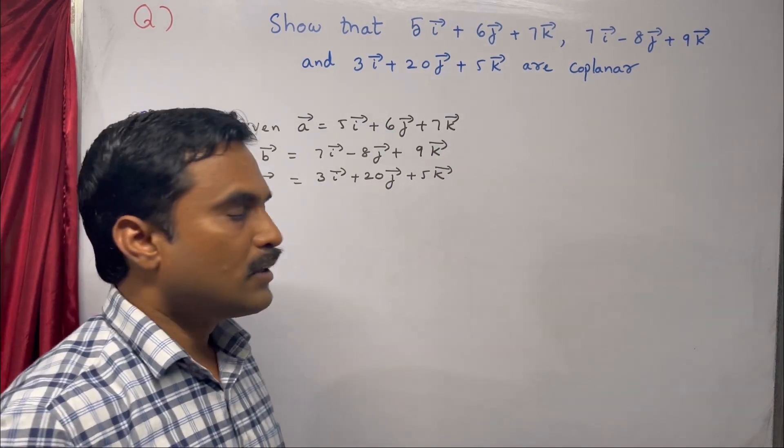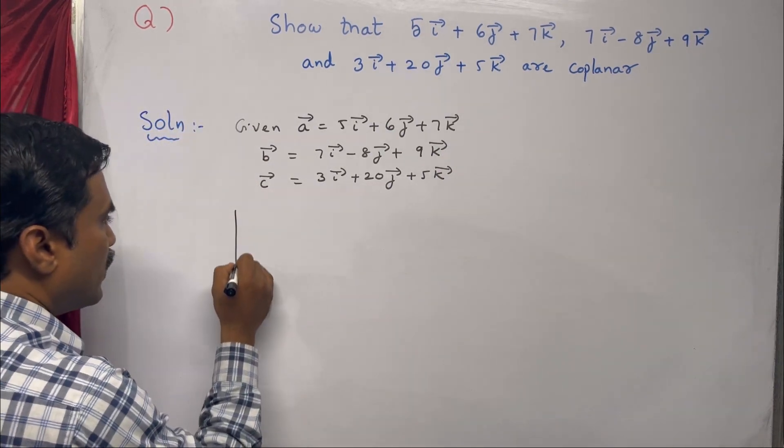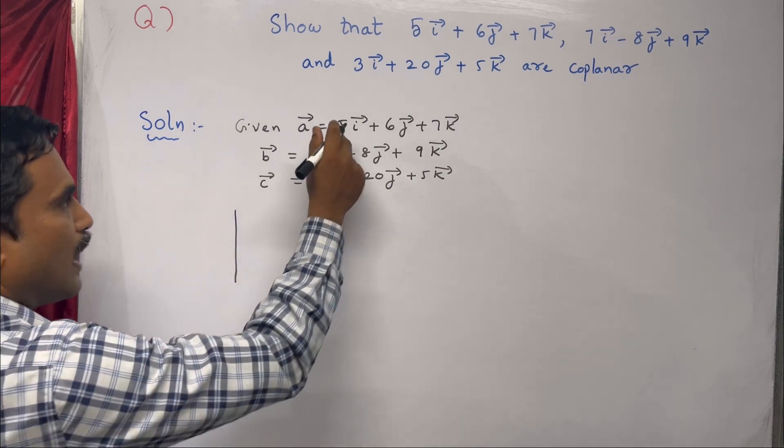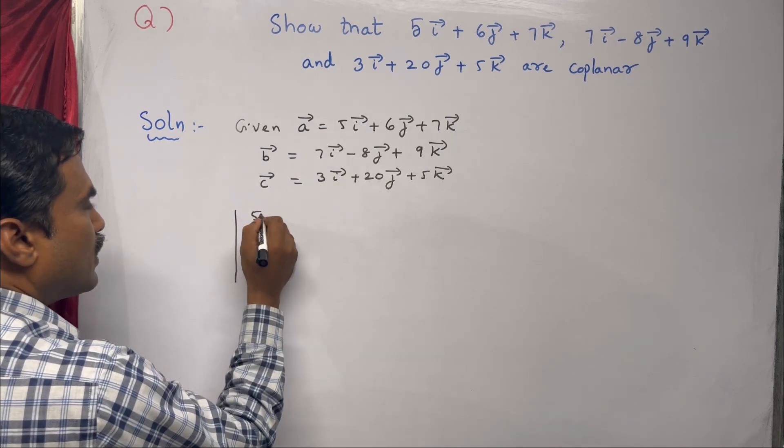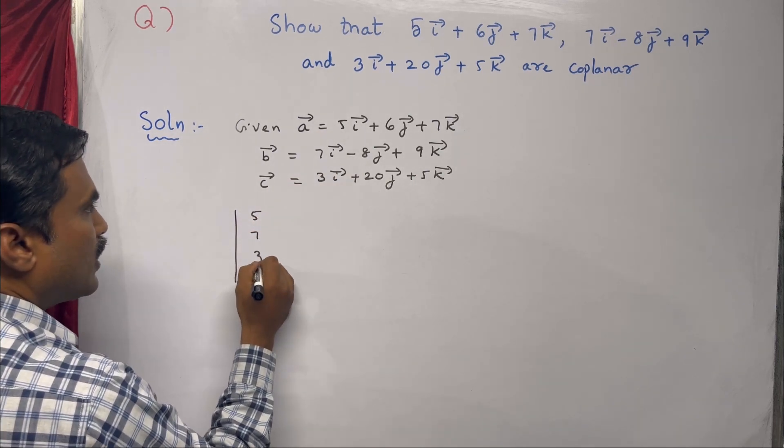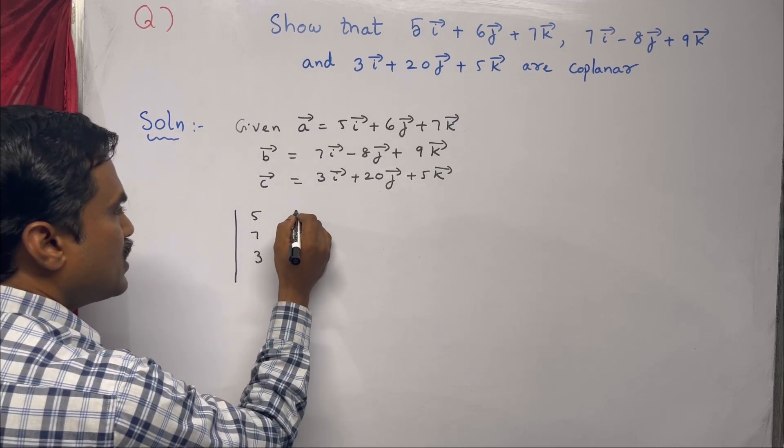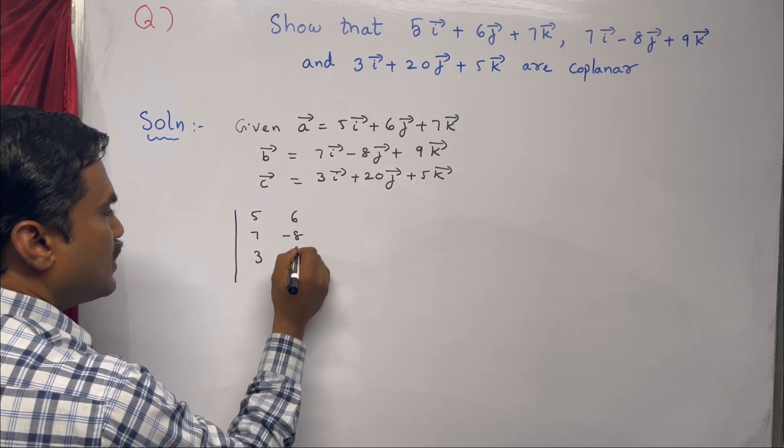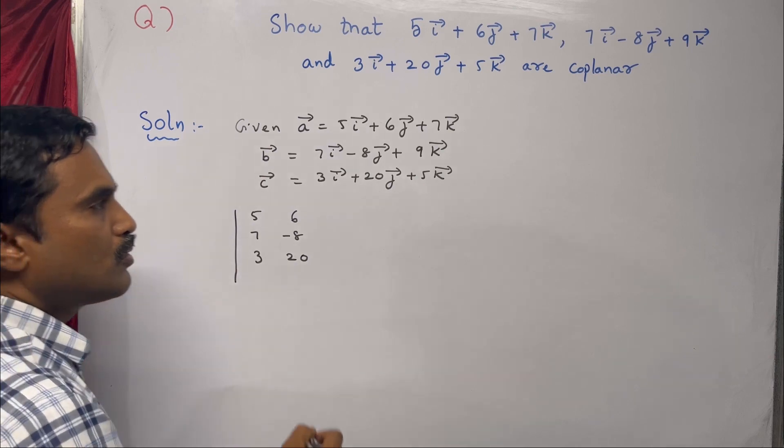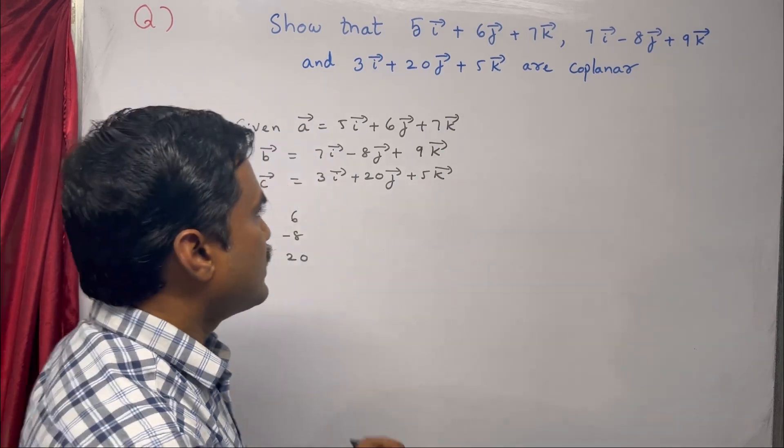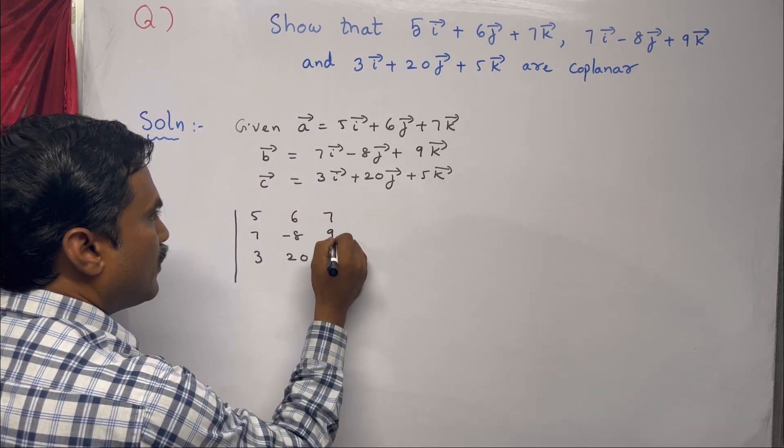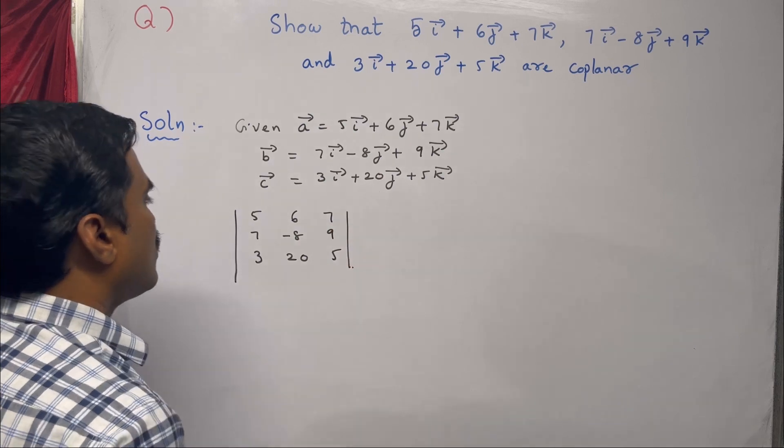We will form a determinant of this. The first column should be the î coefficients, so 5, 7, 3. The second column should be the ĵ coefficients: 6, -8, 20. And the third column should be the k̂ coefficients: 7, 9, 5.